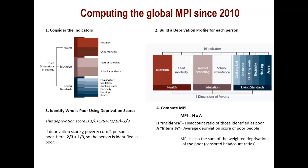From these indicators, recalling that the MPI looks at linkages at the level of the person, you build a profile of the number of indicators each person is deprived in. You then apply weights so that they are equally weighted across dimensions and add them up for a deprivation score. If that score shows the person is deprived in one-third or more of the indicators, they are identified as poor. From that, you obtain the incidence of poverty — the percentage who are poor — and the average deprivation score among the population, which is intensity. The MPI is the product of those two.